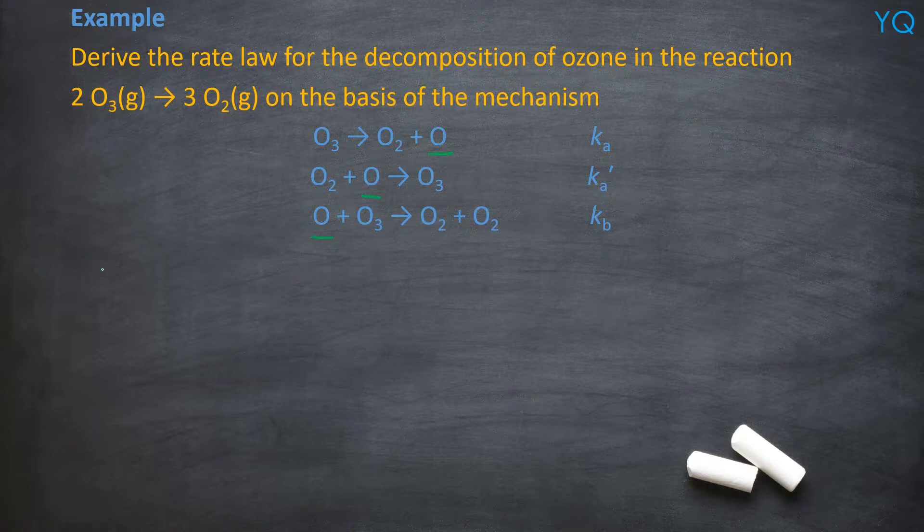Right, so the first step will be to create the equation for your steady state. So the change in concentration of your intermediate, in this case, is ozone over time, will be equal to zero.